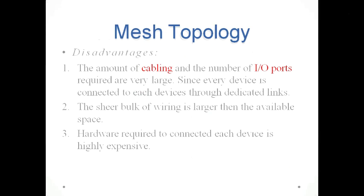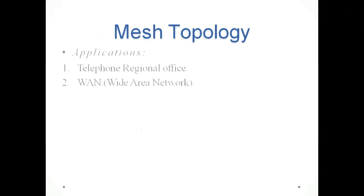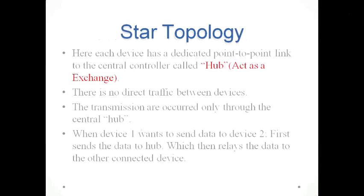Disadvantages of mesh topology: the amount of cabling and number of I/O ports required is very large. Since every device is connected to each other device through a dedicated link, the sheer bulk of wiring is larger than the available space, and the hardware required to connect each device is highly expensive. Applications include telephone regional offices and WAN (wide area network).